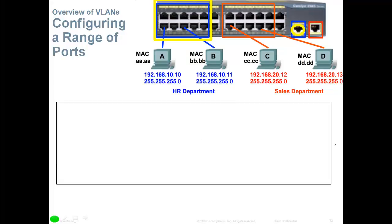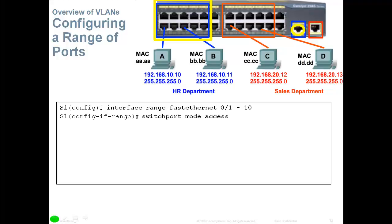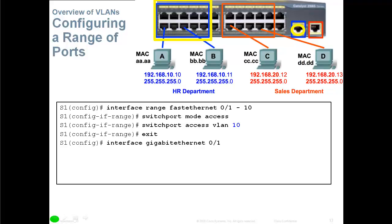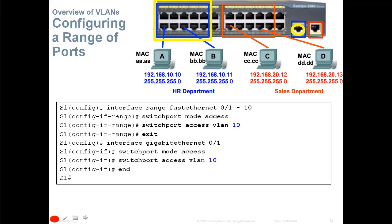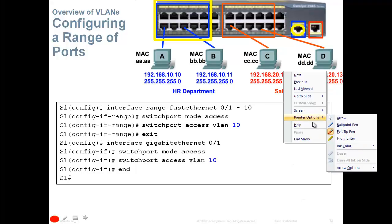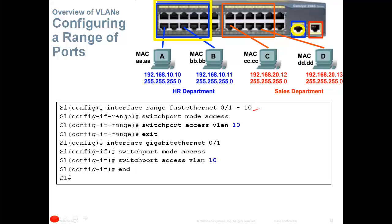Instead of configuring ports one by one, we can use interface range. Type 'interface range FastEthernet 0/1-10' to select all 10 ports at once, then 'switchport mode access' to set them as access ports, then 'switchport access vlan 10'. Exit, then go to 'interface GigabitEthernet 0/1', repeat 'switchport mode access' and 'switchport access vlan 10'. Alternatively, you can combine them in one range command using a space-comma-space separator, e.g., FastEthernet 0/1-10 , G0/1.